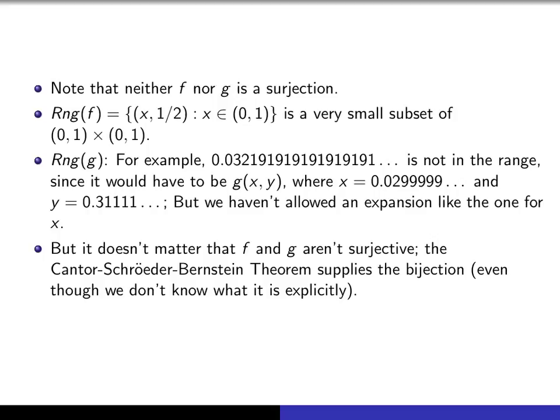But you see, it doesn't matter that f and g aren't surjective. The point is, it was fairly easy for us to come up with these injections, and it's the Cantor-Schröder-Bernstein theorem that does the work for us. It supplies the bijection, even though it doesn't tell us exactly what it is.